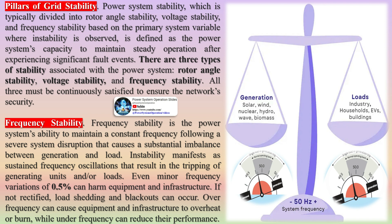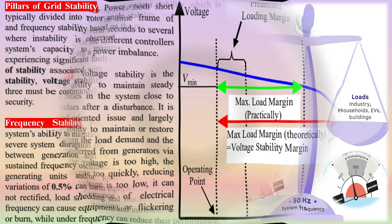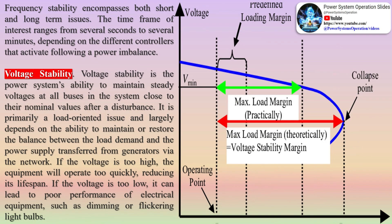Frequency stability is the power system's ability to maintain a constant frequency following a severe system disruption that causes a substantial imbalance between generation and load. Instability manifests as sustained frequency oscillations that result in the tripping of generating units and/or loads. Even minor frequency variations of 0.5 percent can harm equipment and infrastructure if not rectified, and load shedding and blackouts can occur.